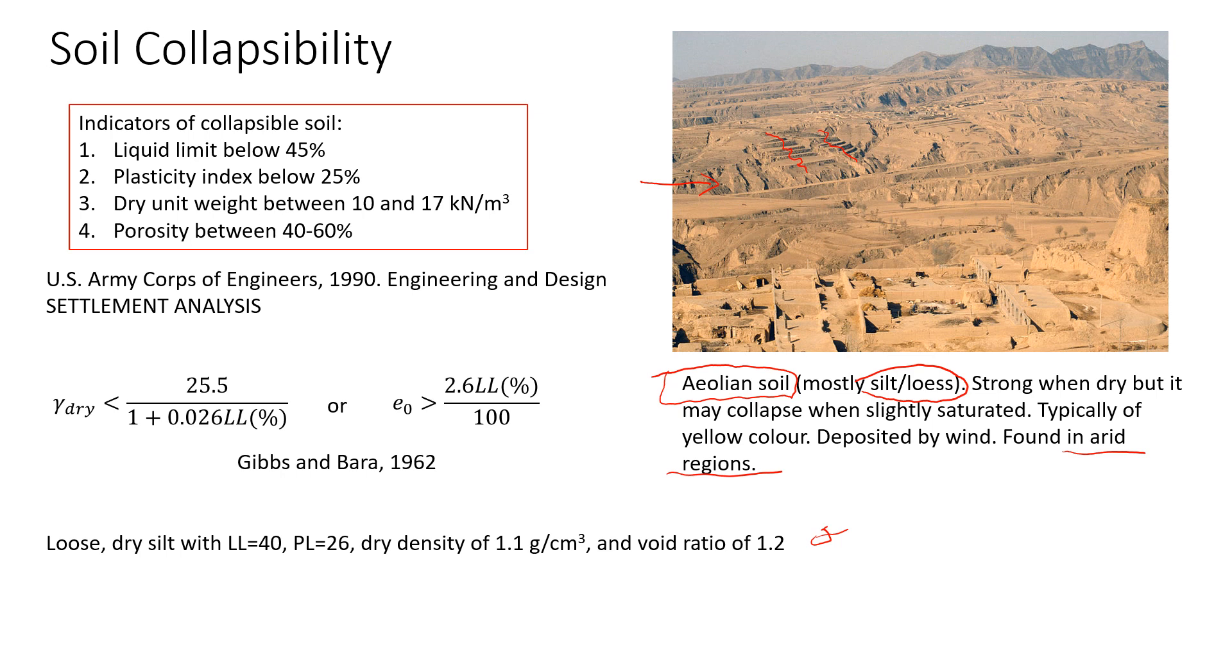Let's say that you work in the area where you might face this type of soil. And you would like to know if this soil is collapsible or not. There are a few indicators that you can use for your estimations. And these indicators we took from this design report by US Army Corps of Engineers. You can find it on the internet if you'd like to read more about this. And there are four factors that we need to consider. These factors are the properties of soil.